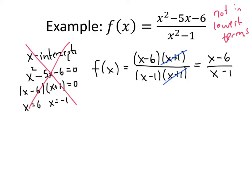And this function only has one x-intercept. If we set (x - 6) divided by (x - 1) equal to 0, the solution turns out to be x equals 6. And we don't get that x equals negative 1 solution anymore.